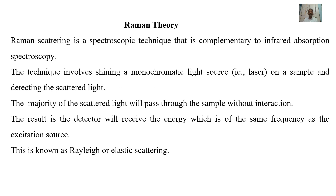We shall discuss instrumentation technique and block diagram of Raman spectroscopy. Raman spectrometers are used to analyze materials by shining a laser on them and analyzing the scattered light. Raman spectroscopy is used in chemistry to identify molecules and study chemical bonding. It can also be used to analyze drugs of abuse and other illicit substances. Raman spectroscopy is a non-destructive chemical analysis technique which provides detailed information about chemical structure, phase, polymorphism, crystallinity and molecular interactions. It is based upon the interaction of light with the chemical bonds within the material.